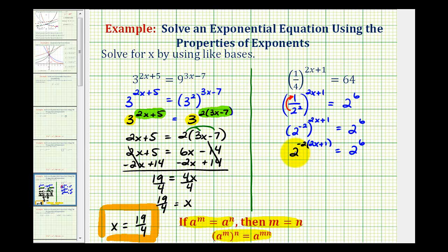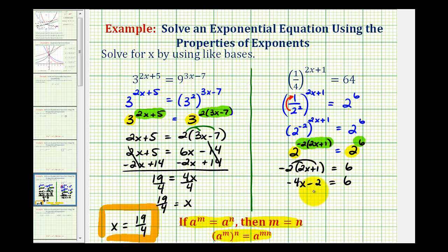Now that the bases are the same and the expressions are equal, the exponents must be equal. So negative two times the quantity two x plus one must equal six. Clearing the parentheses gives us negative four x minus two equals six. Adding two to both sides gives negative four x equals eight. Dividing both sides by negative four, we get x equals negative two.